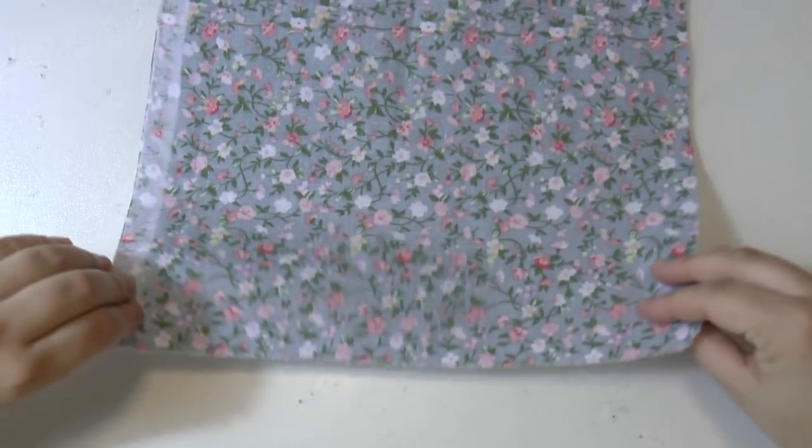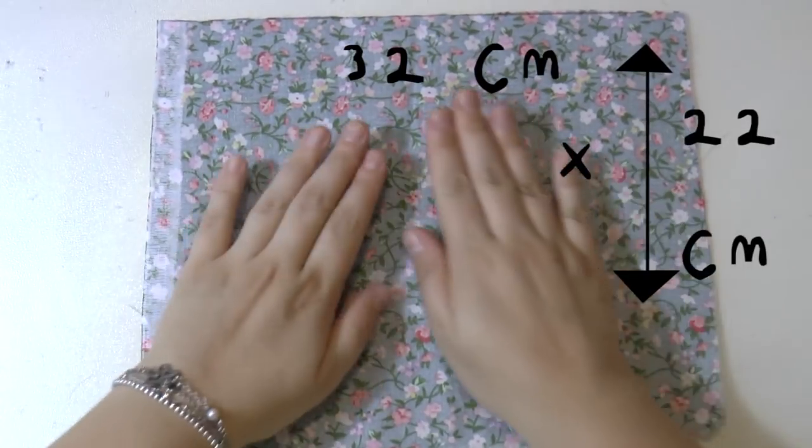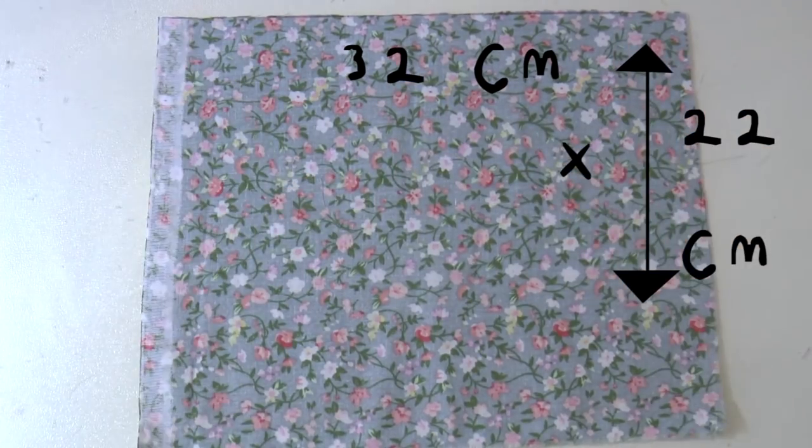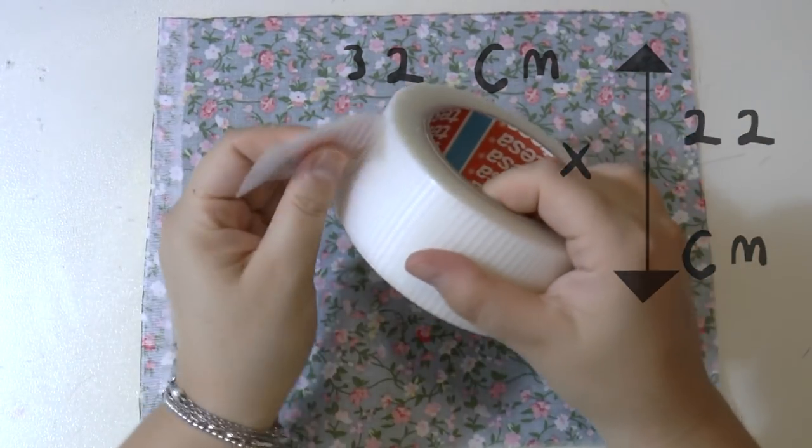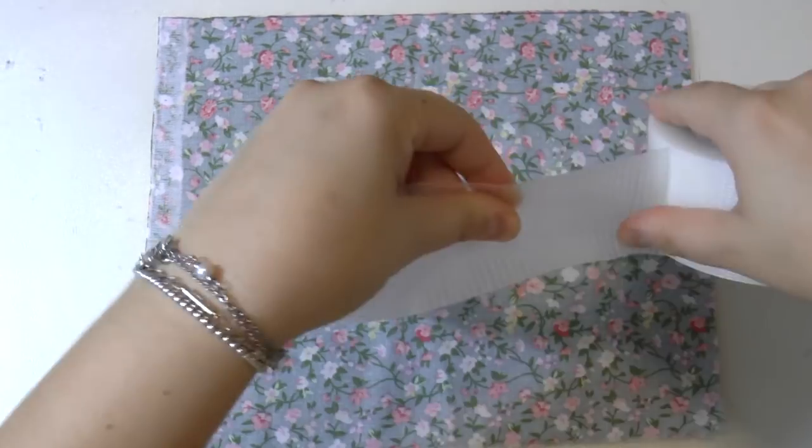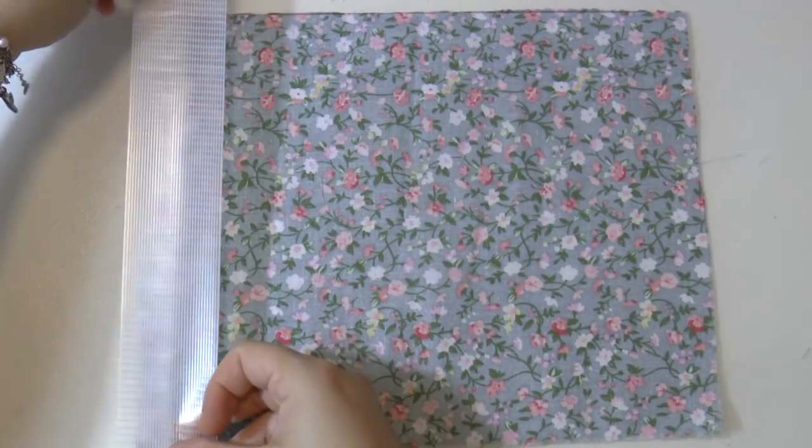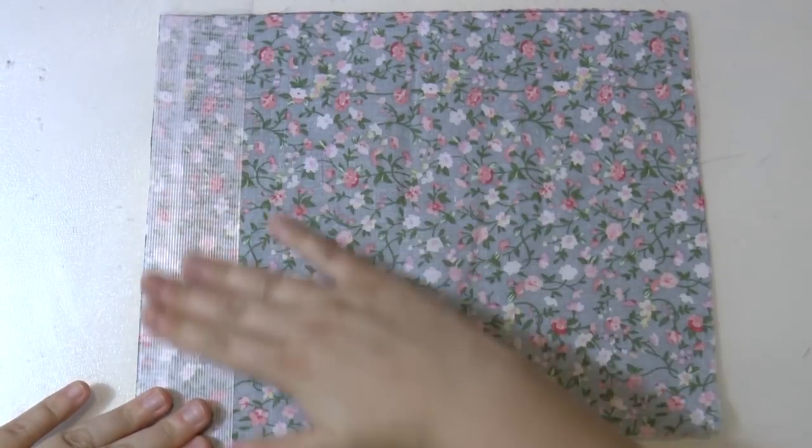First you want to take your piece of fabric and flip it upside down. These are the measurements: 32 and 22 cm. And then you want to take your duct tape and cut many pieces and cover the entire piece of fabric.